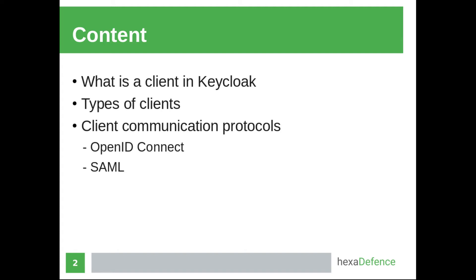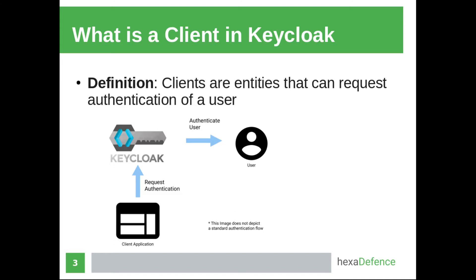First, we need to understand what is a client in the Keycloak Identity and Access Management System. Clients are entities that can request authentication of a user. Clients can request the authentication of a user from the Keycloak system, and Keycloak is the one responsible for authenticating the user. In order to authenticate a user, Keycloak might ask for a username, a password, and also some additional properties such as OTP. With this information, Keycloak will try to authenticate the user.